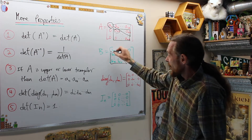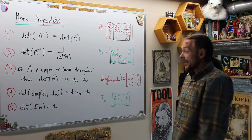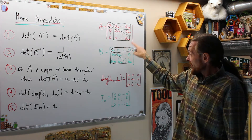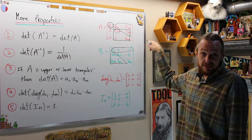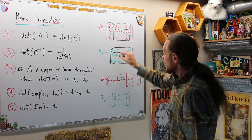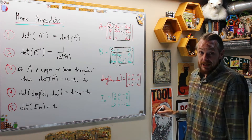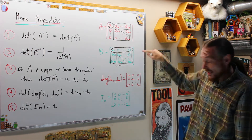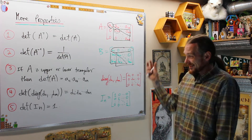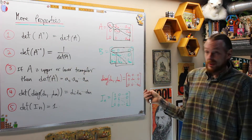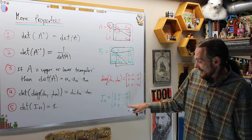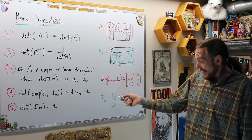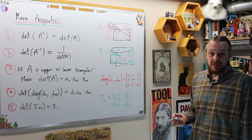Same thing if I have a lower triangular matrix — zeros above the main diagonal. When I cofactor expand along the top row, I don't have to calculate cofactors C12 through C1n because they're multiplied by zero. It'll just be B11 times B22 times all the way to Bnn. That's essentially the proof of why upper or lower triangular matrices have the determinant equal to the product of the diagonal. As a consequence, the determinant of the identity matrix is 1, because the identity matrix is diagonal with every entry equal to 1, so it's 1 multiplied by itself n times, which is 1.